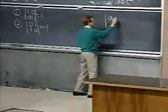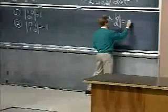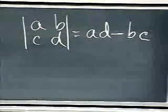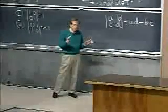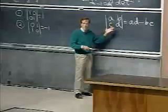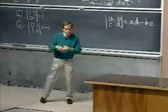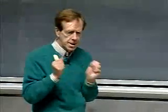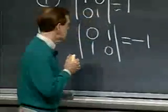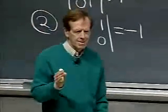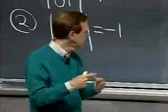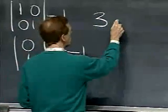The whole point of these properties is that they're going to give me a formula for n-by-n. They're going to give me this number that's a test for invertibility and has other great properties for any size matrix. Now I'm slowing down because property three is the key property. Maybe I'll separate it into three A and three B.